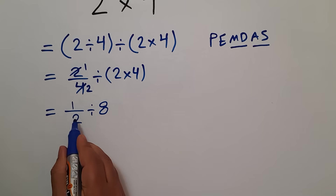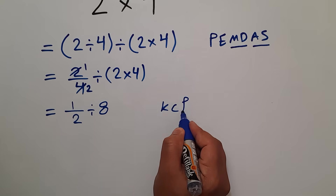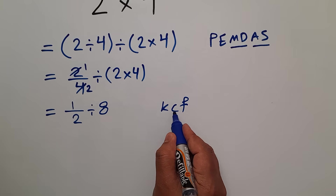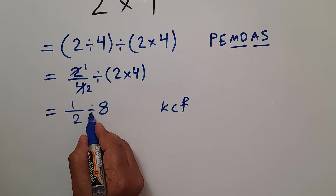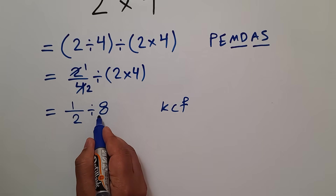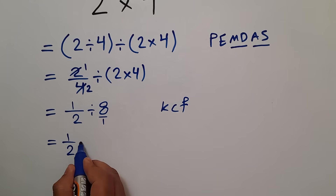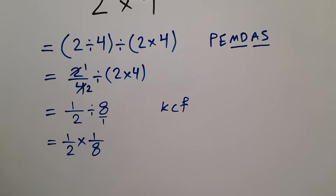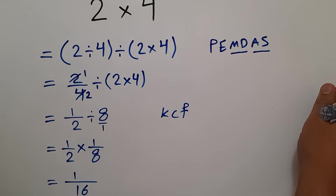So we have 1 over 2 divided by 8. According to the KCF rule — K stands for keep, C stands for change, and F stands for flip — keep the first fraction, change division to multiplication, and flip the second fraction. Our second fraction is 8 over 1, so we can write 1 over 2 times 1 over 8. This equals 1 divided by 2 times 8, which equals 16. Therefore, our final answer to this problem is 1 over 16.